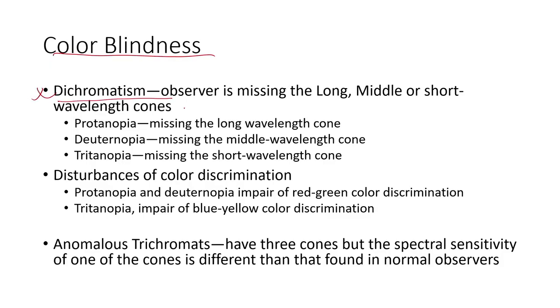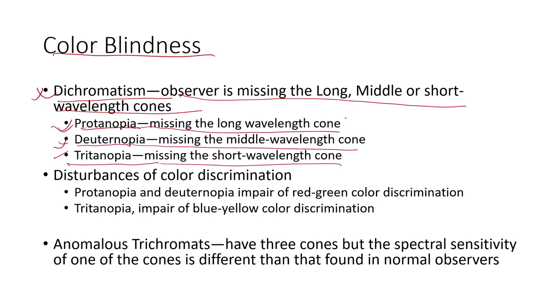On color blindness: there is something called dichromatism where an observer is missing one of the long, middle, or short wavelength cones. There are three forms — protanopia, which is missing the long wavelength cone; deuteranopia, which is missing the middle wavelength cone; and tritanopia, which is missing the short wavelength cone. If you miss one of these cones you will not be able to see that particular color. These cones have a dual-end sensitivity, meaning over-stimulation by one color can produce a contrasting color — this is called the color after-effect. For example, if you stare at red and then look at a white screen, a contrasting color will appear.